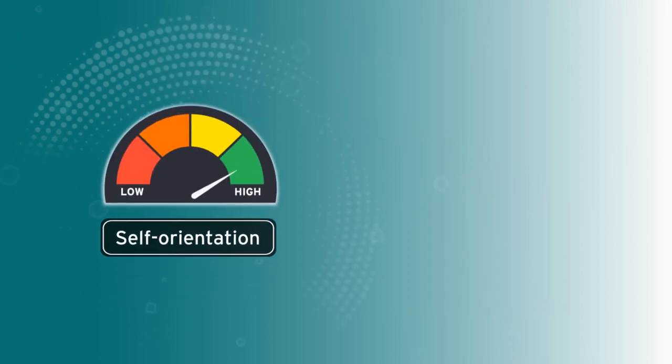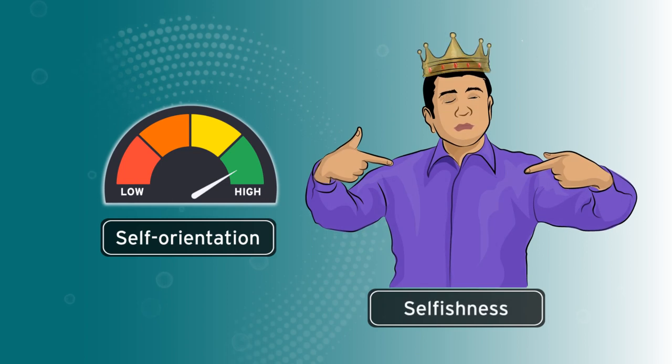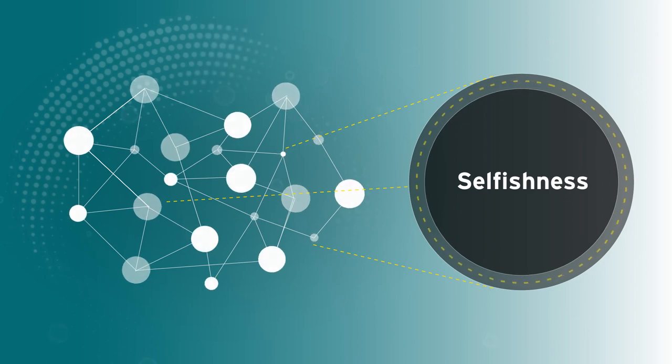The most obvious form of high self-orientation is selfishness, a sense that the person is in it for themselves and not for others. Although in business, pure selfishness is typically not the main issue. That's because it's pretty easy to spot.